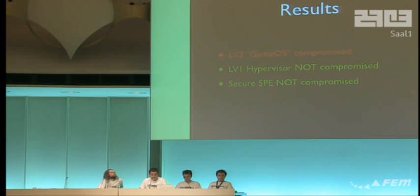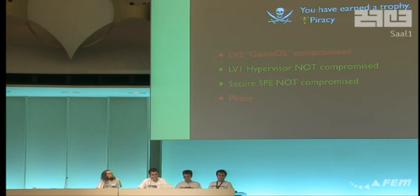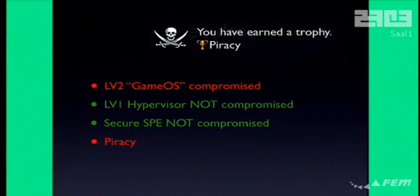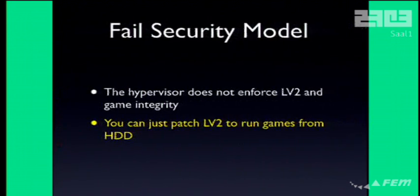So we have LV2 compromised, but we have not compromised the hypervisor and we have not compromised the secure SPE. So what happens now? Why can't we pirate games by just compromising LV2? It's because the security system makes no sense. It turns out you can just copy games to the hard drive, patch LV2 to run them from the hard drive, and LV1 doesn't care and the secure SPE doesn't care. So you can break 20% of the security and copy games, which is 100% of what Sony doesn't want you to do.